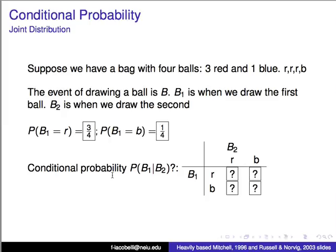Now we're going to talk a little bit about conditional probability. What is the probability that the second attempt we obtain a red ball given that in the first attempt we obtained a blue ball? What's the probability that in the subsequent attempts we obtain the balls that we want?